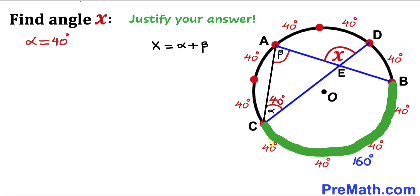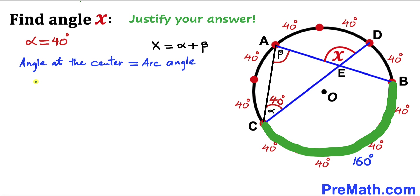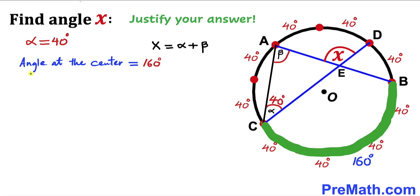Because the sum of 40 plus 40 plus 40 plus 40 is going to give us 160 degrees. And we know that the angle at the center is the same as the arc angle, so our angle at the center is going to be 160 degrees.